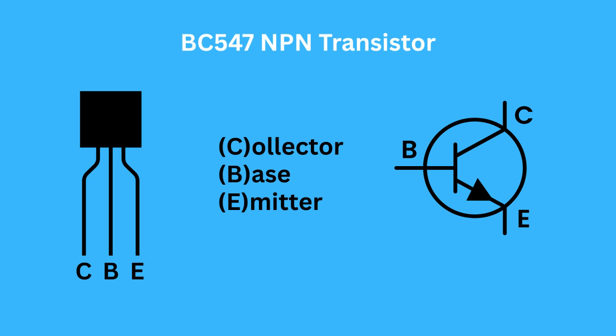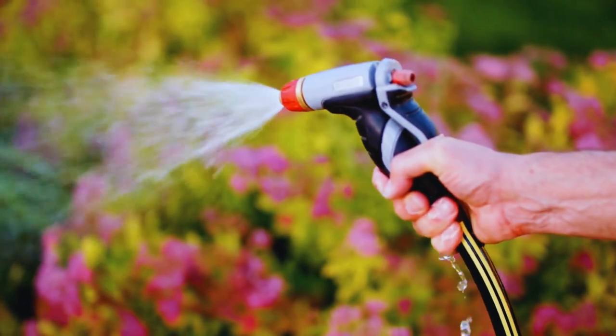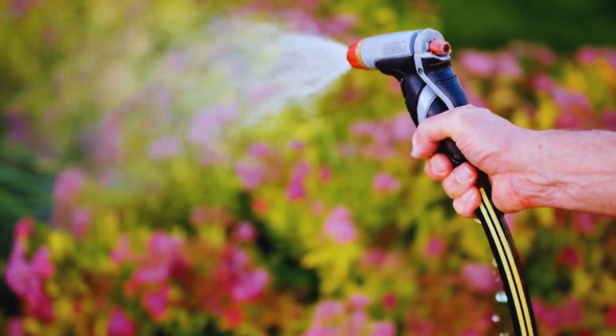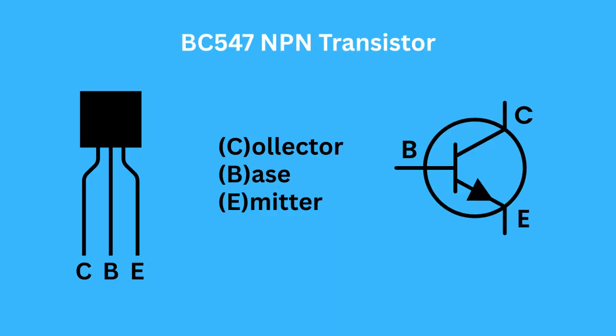A BC547 transistor is like a tiny electronic switch or a super small amplifier. Imagine you have a garden hose and you want to control the flow of water. A transistor works a bit like that. It has three legs or wires: the collector, the base, and the emitter.